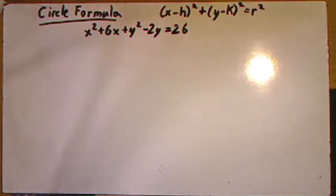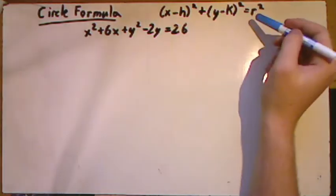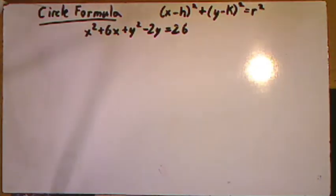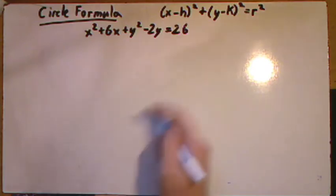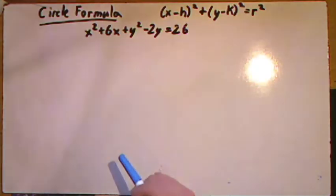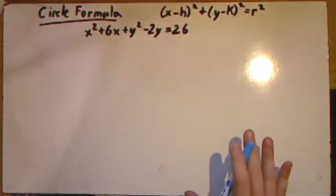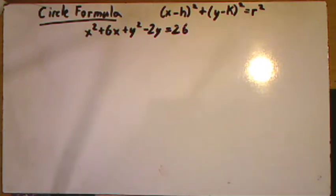However, we also want to know how to take this form and bring it back to our original, so we can get the h, the k, and the r values that we would need to get our center points being h and k, and our radius being r. As I mentioned in the slides, what we did in order to get our formula like this is actually going to be the same or very similar steps we take to go backwards.